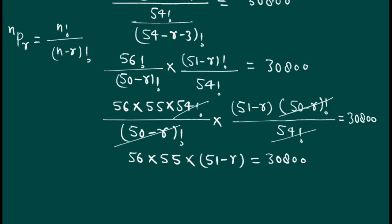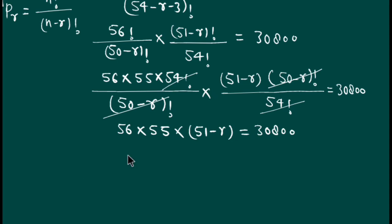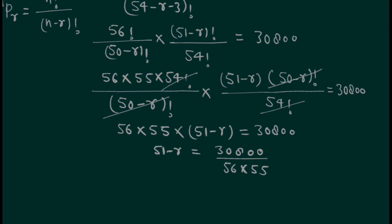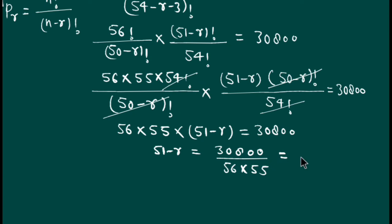Now we need to find the value of r. Isolating (51 minus r), we move 56 times 55 to the right-hand side as the denominator: 30800 divided by 56 times 55. This expression gives us 10. So 51 minus r equals 10.